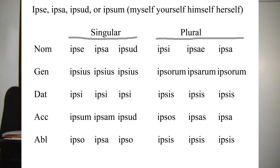The declension of ipse: nominativus ipse, ipsa, ipsum; genitivus ipsius, ipsius, ipsius; dativus ipsi, ipsi, ipsi; accusativus ipsum, ipsam, ipsum; ablativus ipsum, ipsum, ipsum. In the plural: nominativus ipsi, ipsae, ipsa; genitivus ipsorum, ipsarum, ipsorum; dativus ipsis; accusativus ipsos, ipsas, ipsa; ablativus ipsis.